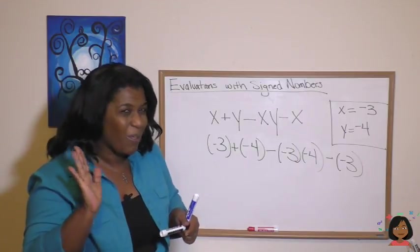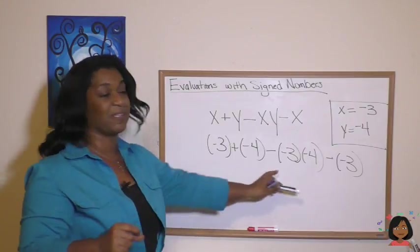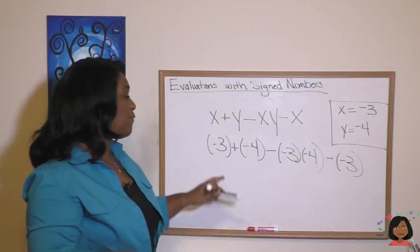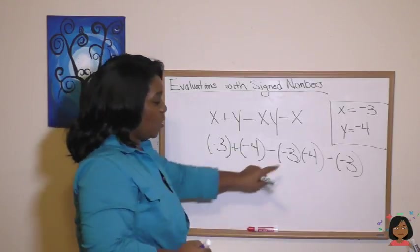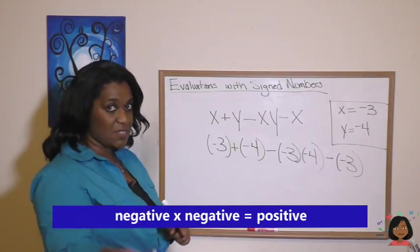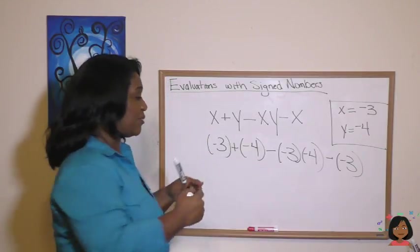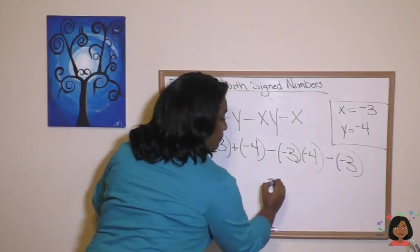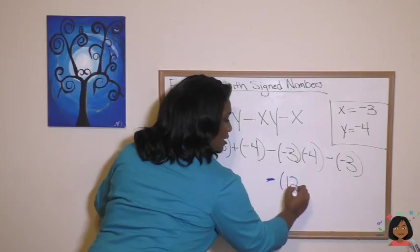Well, where do we go next? Our rules of PEMDAS say that we do the multiplication in this problem before we do the addition or subtraction. So let's do that. We have a negative three times a negative four. Negative times a negative is a positive, so three times four is going to be 12. So I'm going to put my minus sign and inside of a parentheses, a 12.